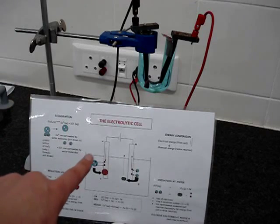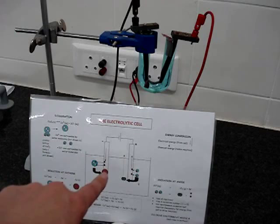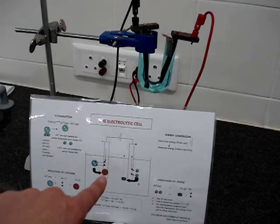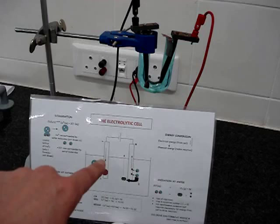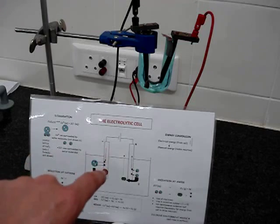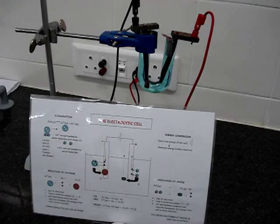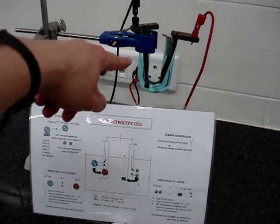But because the copper ion has been attracted to the negative electrode, it doesn't really have a choice anymore. It has to accept the extra electrons that are lying there on that electrode which made it to be negative, pumped there by the power source.